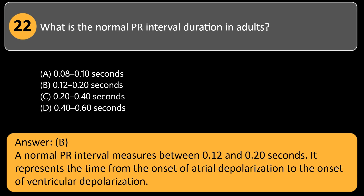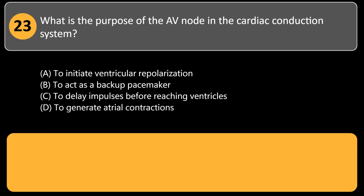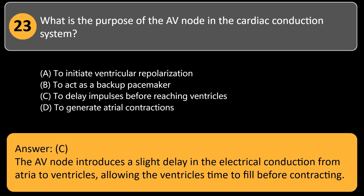It represents the time from the onset of atrial depolarization to the onset of ventricular depolarization. What is the purpose of the AV node in the cardiac conduction system? A. To initiate ventricular repolarization. B. To act as a backup pacemaker. Answer: C. The AV node introduces a slight delay in the electrical conduction from atria to ventricles, allowing the ventricles time to fill before contracting.